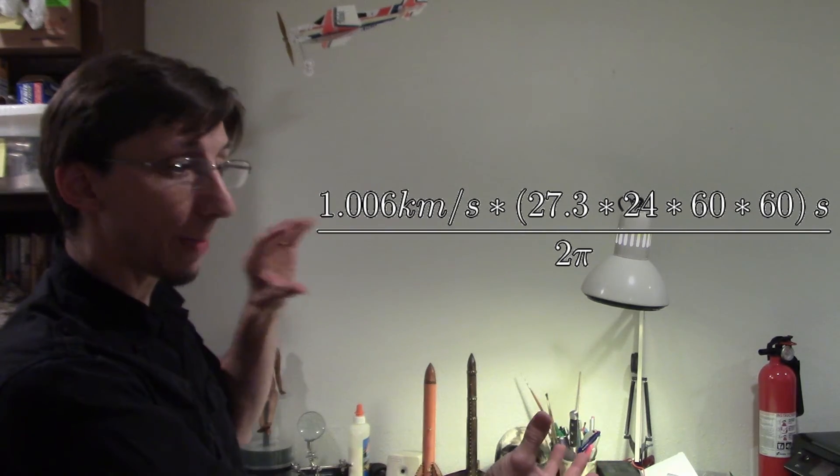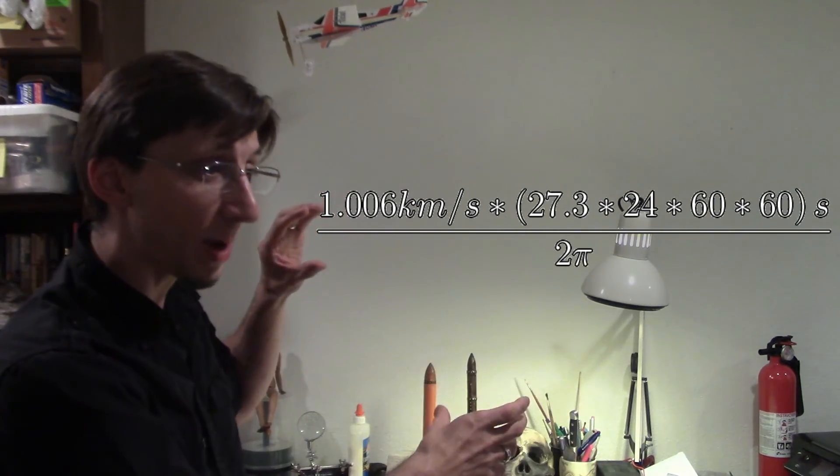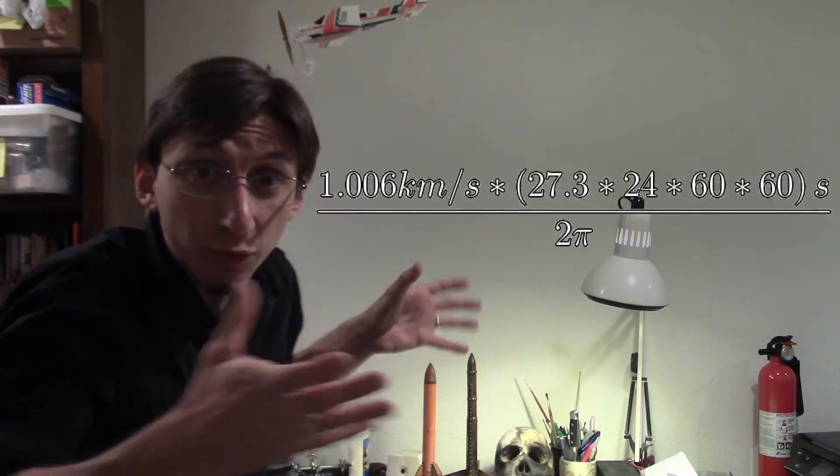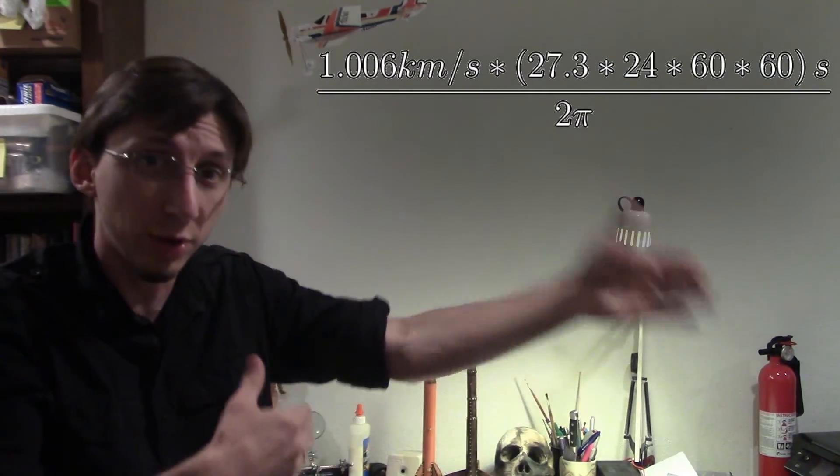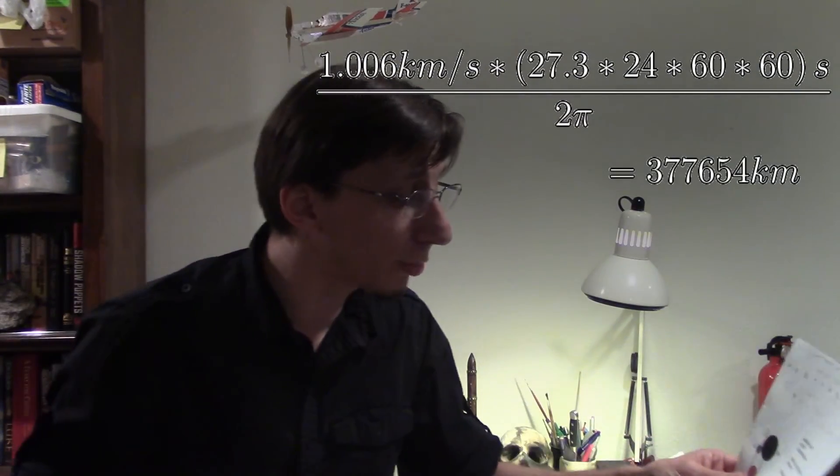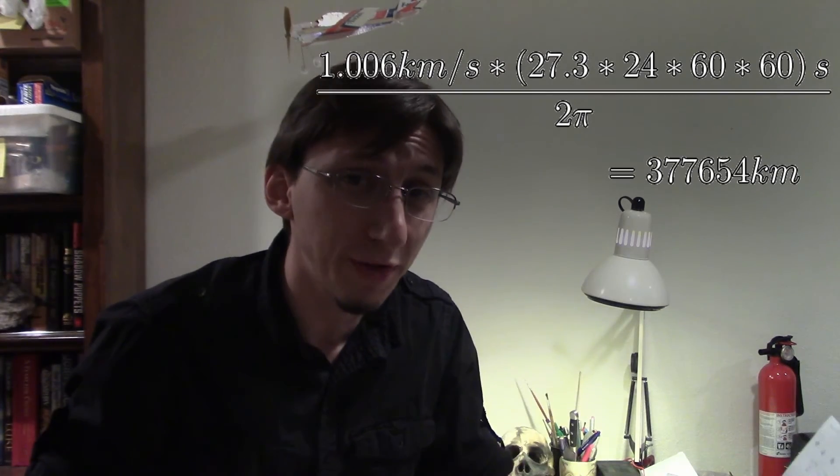Remember, this chunk on the top is the circumference. If we divide it by 2π, that gives us the radius. The radius, that's the distance from the Earth to the Moon. In this case, I ended up with 377,654 kilometers. That's pretty good.